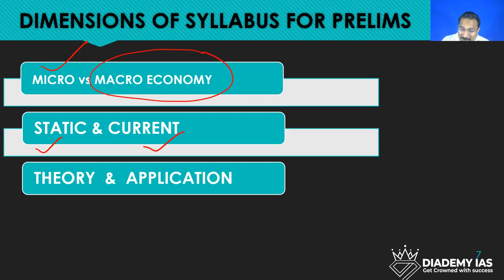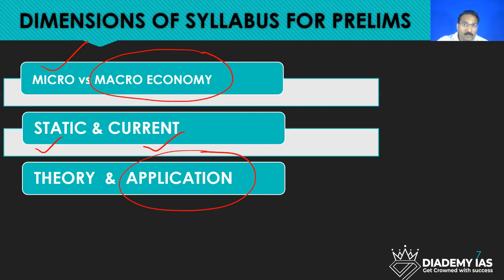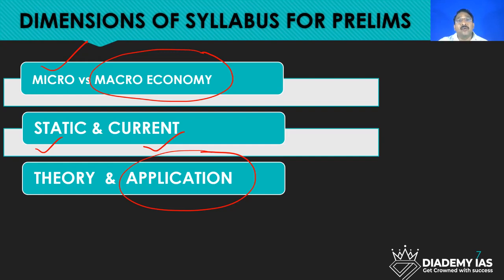Theory and application — the application part is very, very important. They will not ask direct questions; they will ask questions where you need to apply your mind. For example, in 2020 they asked a question about money supply in the economy — one lakh rupees withdrawn from the bank. That is a perfect example of moving towards the application part.